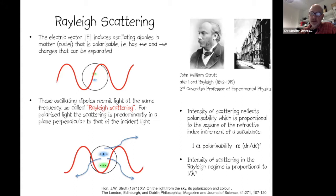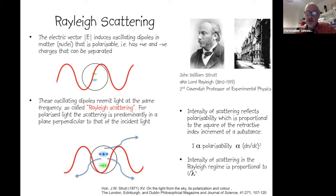The intensity of scattering reflects how easy it is and how many polarizable dipoles there are within the system. This is also reflected in the refractive index increment — the way the particle you're studying affects refractive index. The intensity of scattering is proportional to the square of the refractive index increment, which is how much the refractive index increases with concentration. Notably, the intensity of scattering is also proportional to the reciprocal of wavelength raised to the power of four.